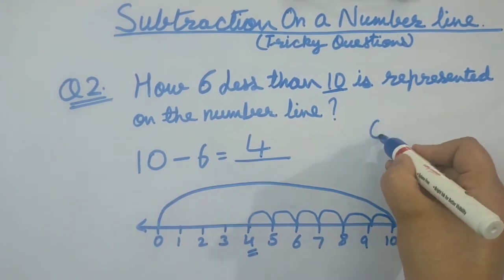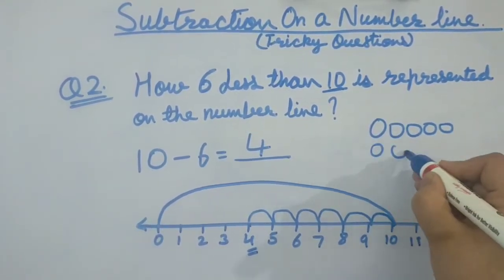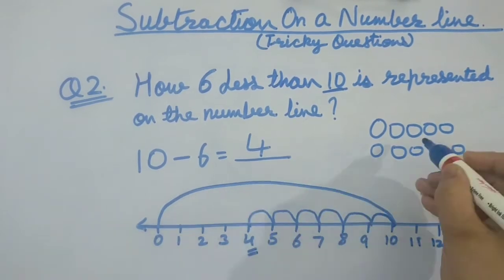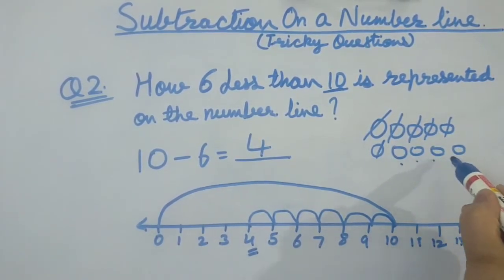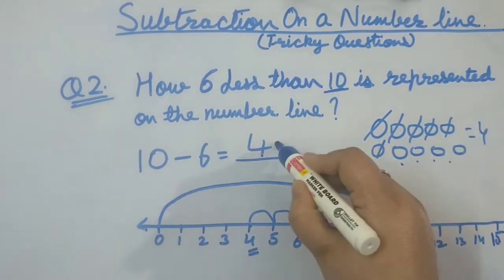Checking on circle method. Drawing circles 1 through 10. How many to be cut? 6. Cutting 1, 2, 3, 4, 5, 6. Counting remaining: 1, 2, 3, 4. Yes, our answer is 4. That is correct.